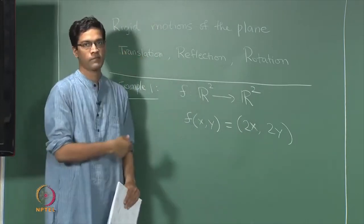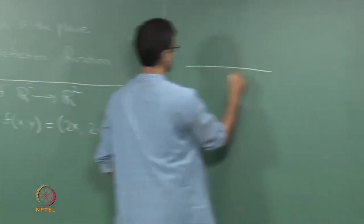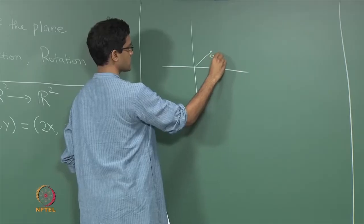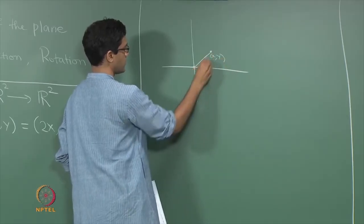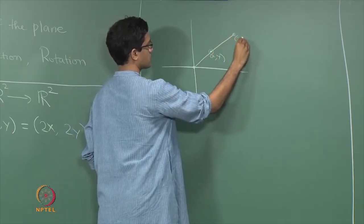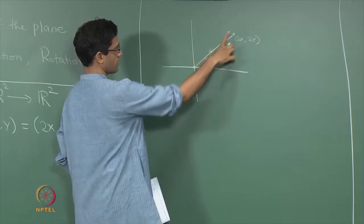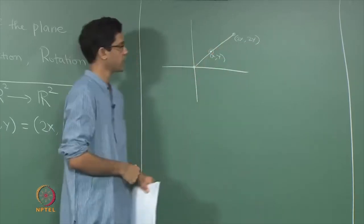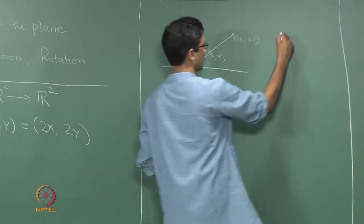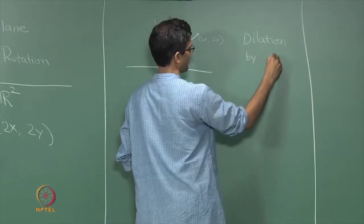What this does is multiply the x-coordinate by 2 and the y-coordinate by 2. Geometrically speaking, it takes the point (x, y), joins it by a line segment to the origin, and maps this point to the point along the same line but twice as far — it maps it to (2x, 2y). It takes the point (x, y) and blows it up by a factor of 2, stretching that line segment by a factor of 2. This is sometimes called a dilation by a factor of 2, where dilation means either a stretch or a shrink by some factor.